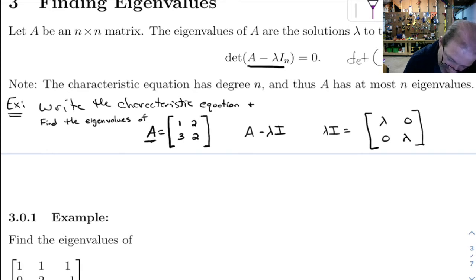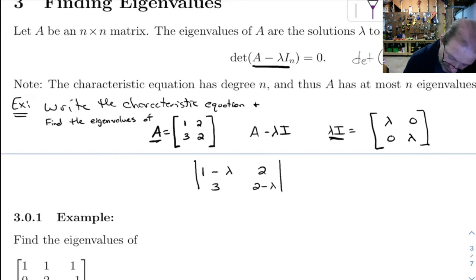So what we're doing is we're taking the determinant of A minus I lambda. If we do A minus this, we get the matrix 1 minus lambda, then 2 minus 0, 3 minus 0, and then 2 minus lambda.